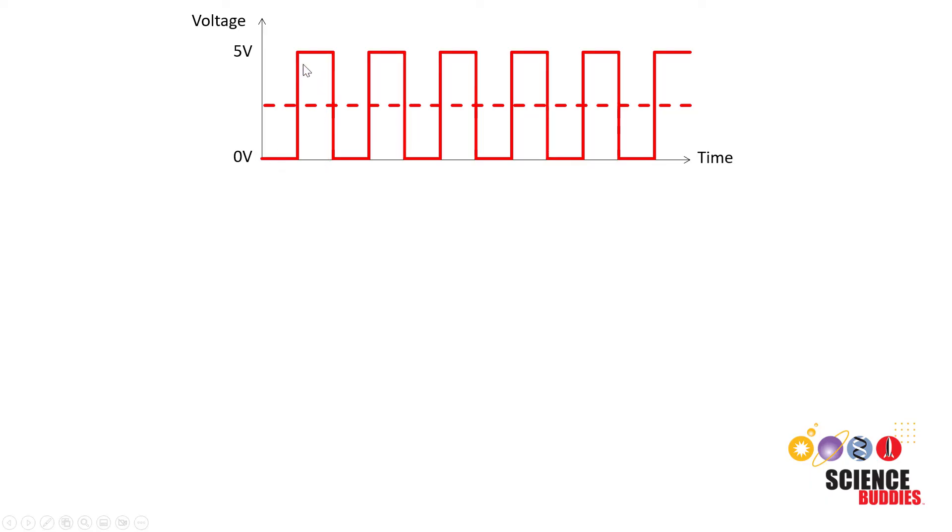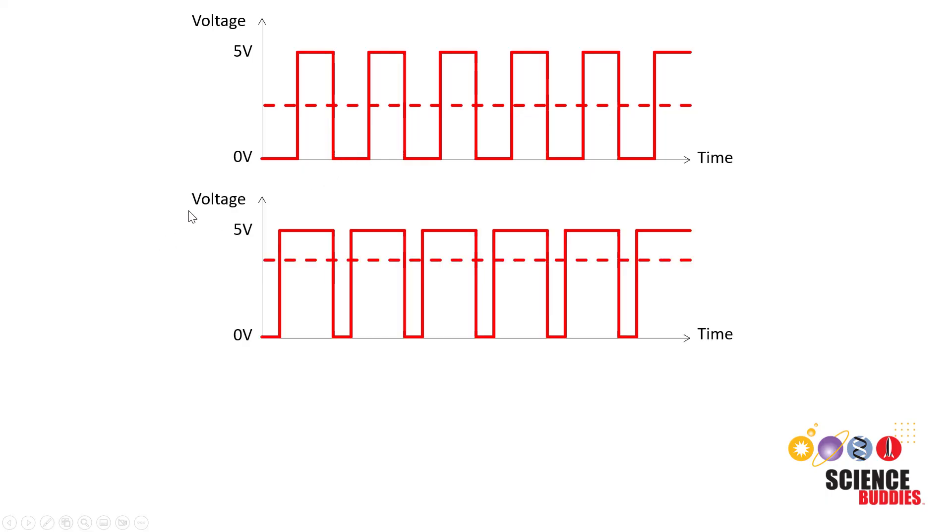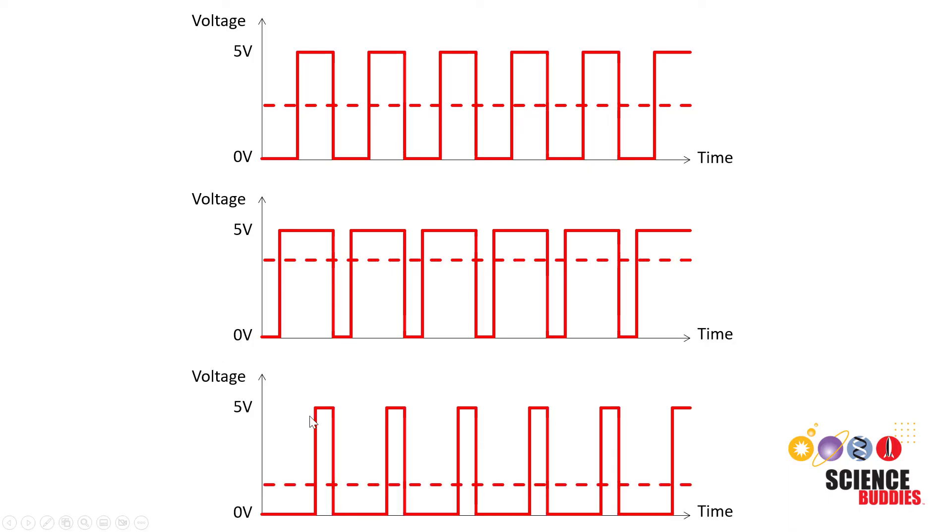It's called pulse width modulation because we can change or modulate the width of this pulse. For example, here the pulse is on 50% of the time and off 50% of the time, but we could change that so it's on for 75% of the time and off for 25% of the time. Or the other way around, we could change it so it's only on for 25% of the time and off for 75% of the time. We can use this to control the brightness of an LED by switching it on and off much faster than the human eye can see.